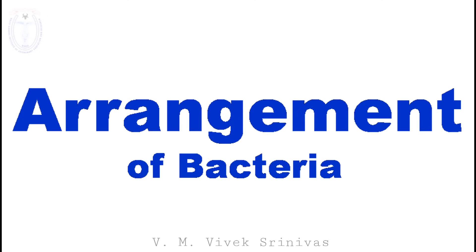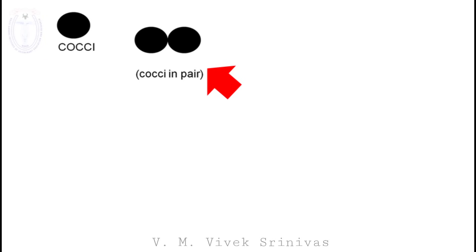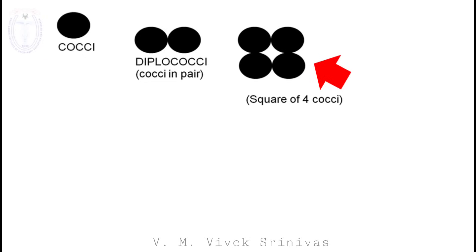Now we will see about the different arrangements observed in bacteria. The spherical shaped bacteria is called cocci. If two cocci are arranged in a pair, it is called diplococci. If arranged in a square of four cocci, it is called a tetrad — the example being Micrococcus species.